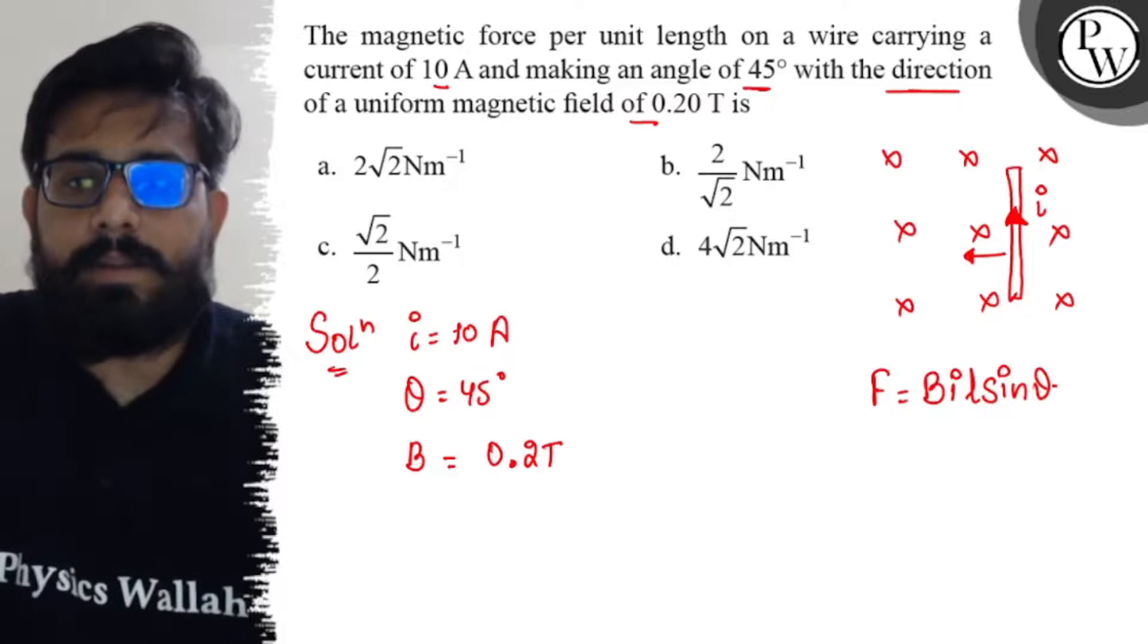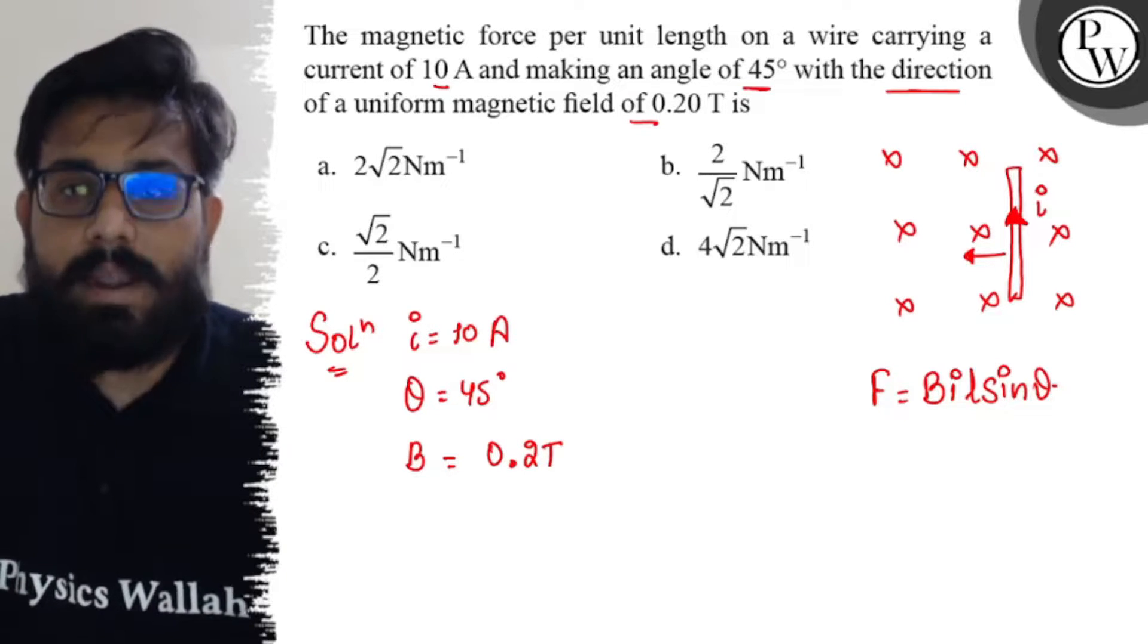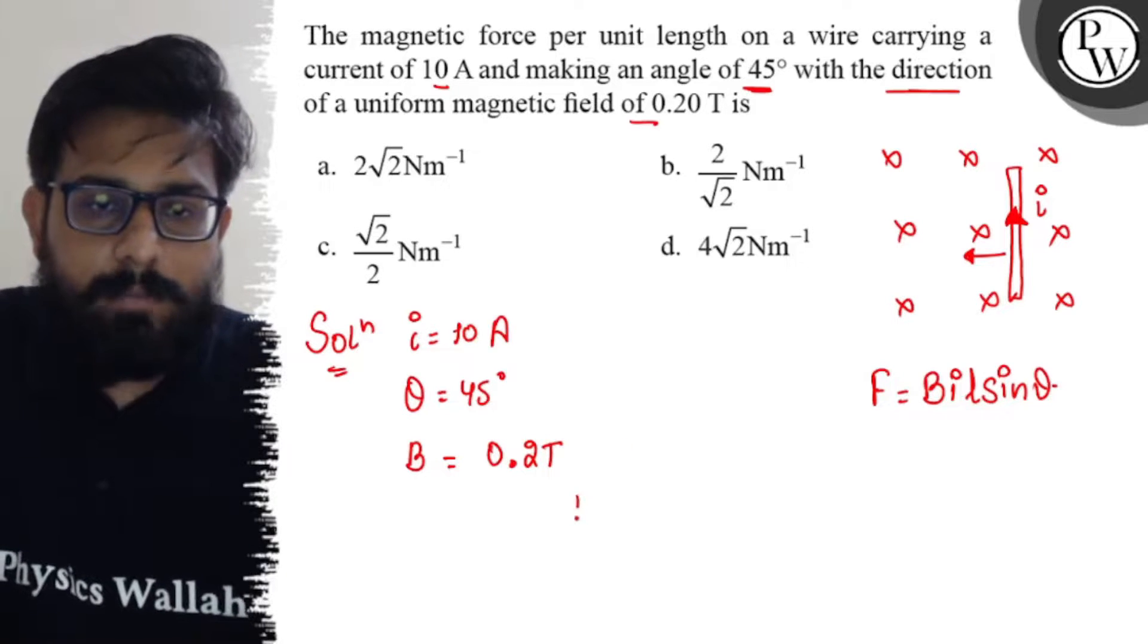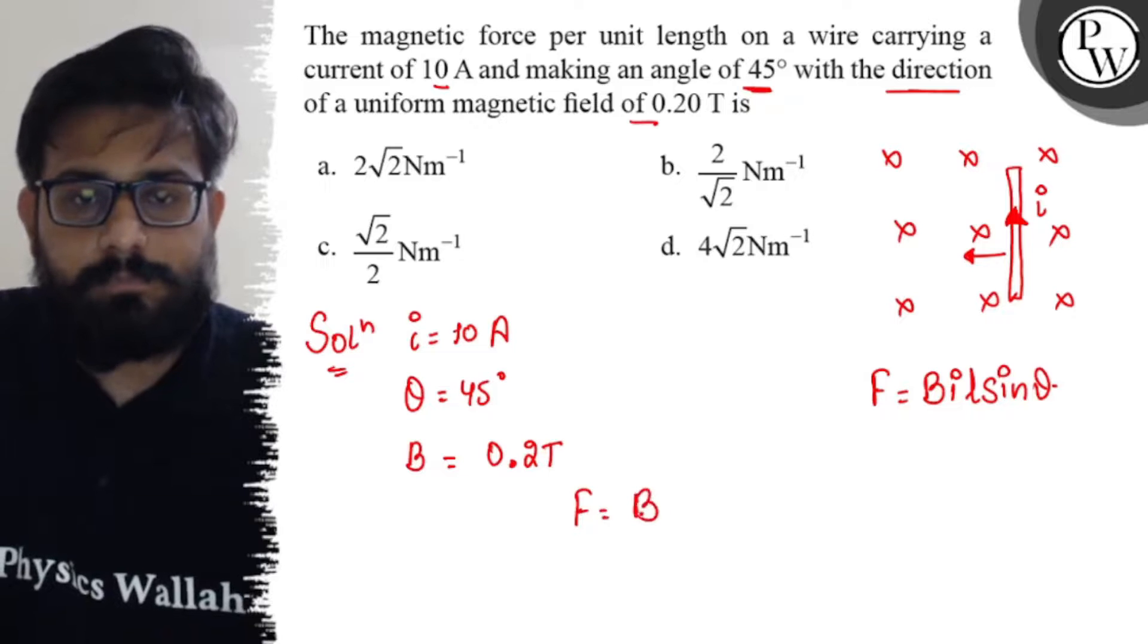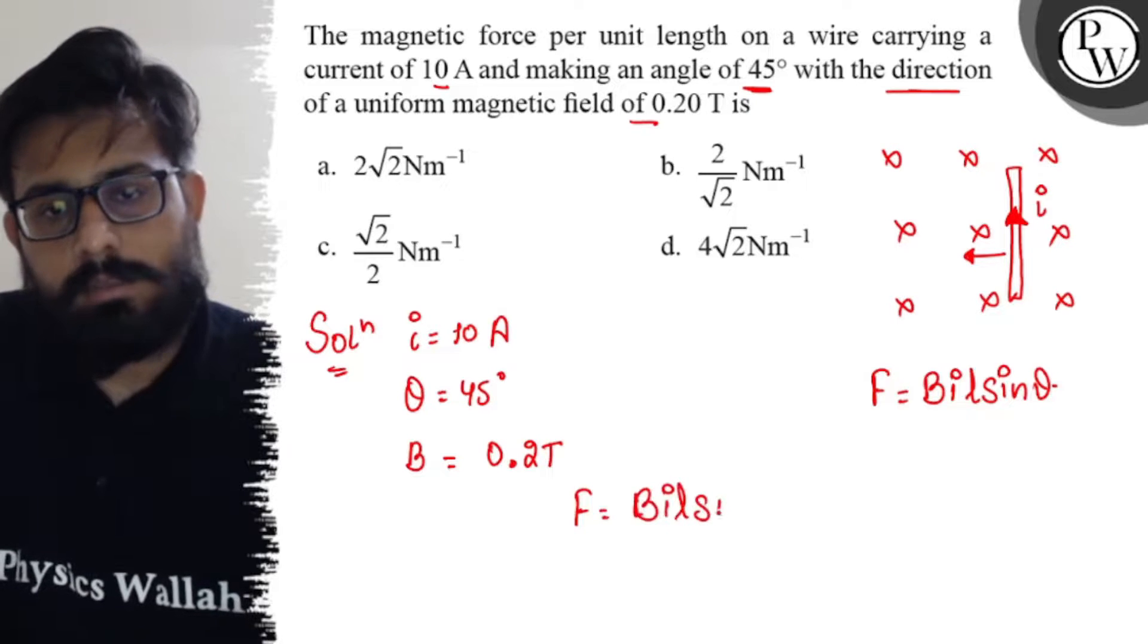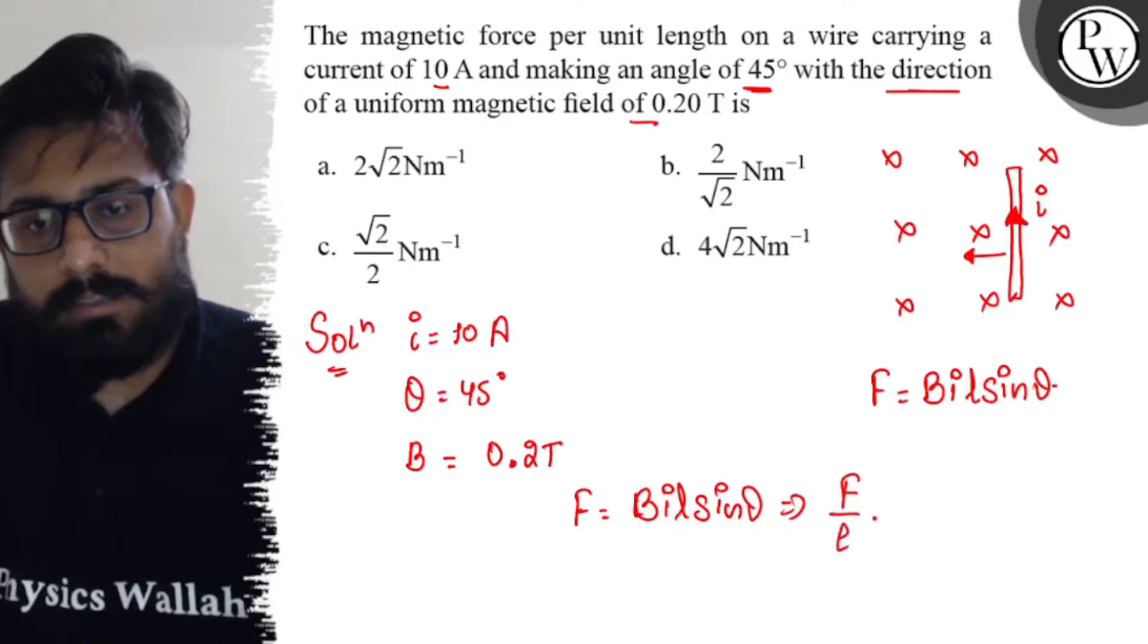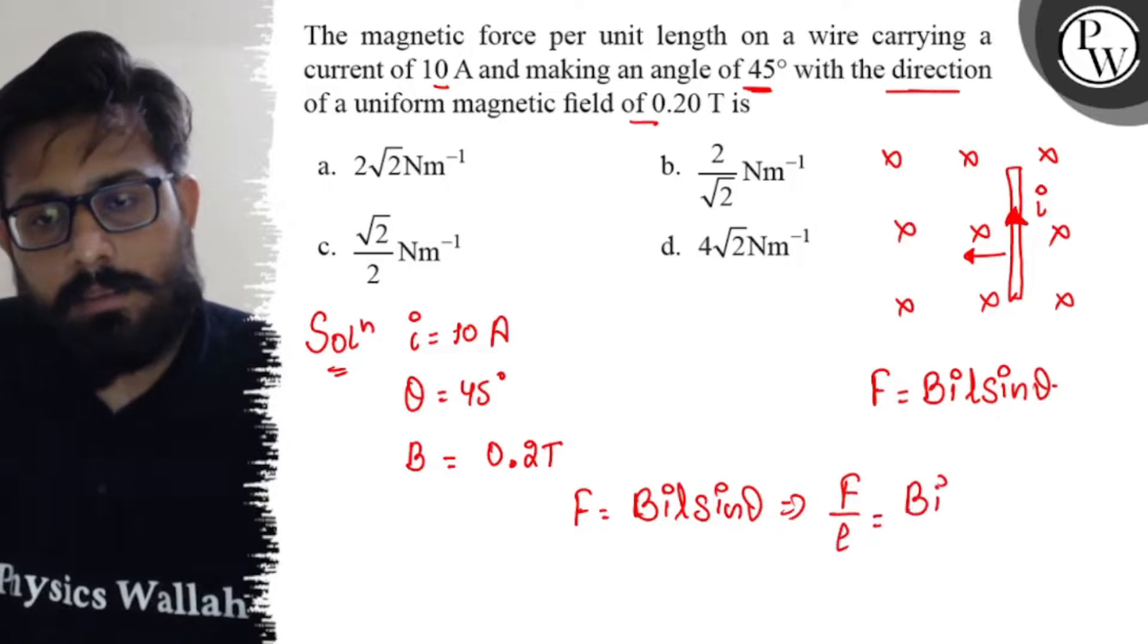Theta is the angle between the length vector and the magnetic field. Here the angle is 45 degrees. So this can be written as F = BIL sine theta. So from here, F/L can be written as BI sine theta.